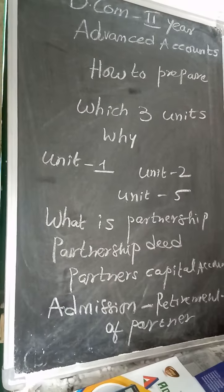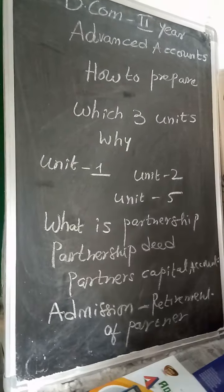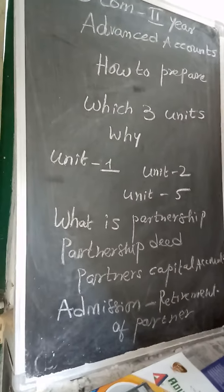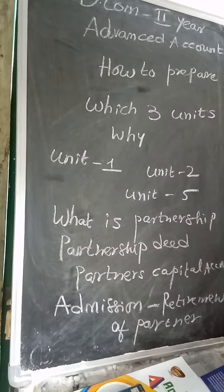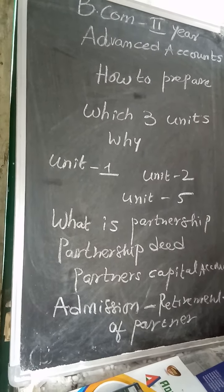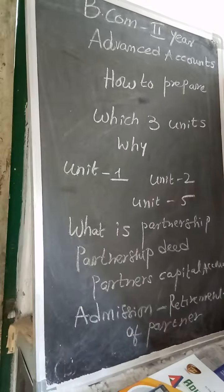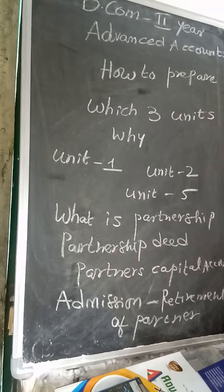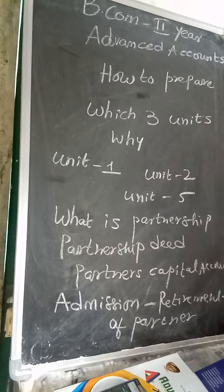The agreement made between the partners before they start the business is known as the partnership deed. The contents of a partnership deed include: the name of the partners, address of the partners, name of the business, capital contributed by them, interest on capital, interest on drawings, and if any partner gives a loan, what is the rate of interest.